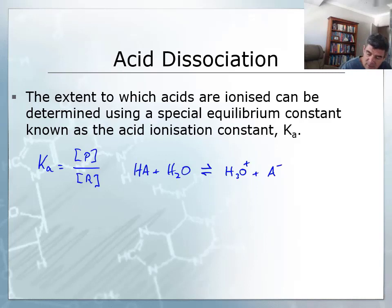We know that water is a liquid, so its concentration will not change and will remain constant. Therefore, the Ka value simplifies to the concentration of the H3O+ ions multiplied by the A- ions, all divided by the concentration of HA.